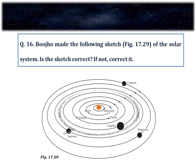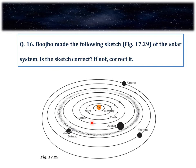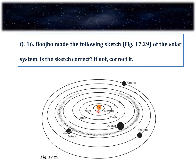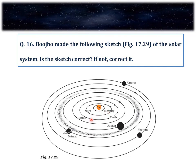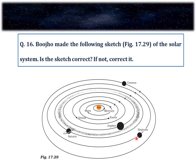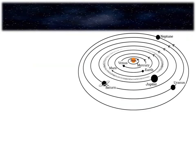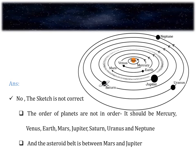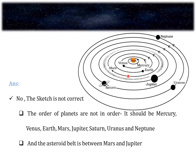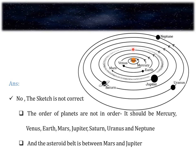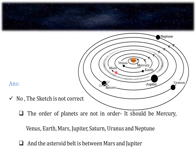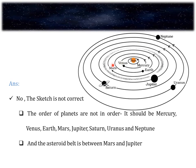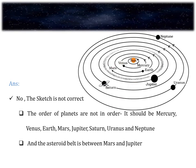Question number 16. Baju made a sketch of the solar system — is the sketch correct? In the sketch we see: Sun, Mercury, Mars, Earth, Venus, Jupiter, asteroid belt between Jupiter and Saturn, Neptune and finally Uranus. This is not correct. The correct order is Mercury, Venus, Earth, Mars, Jupiter, Saturn, Uranus and Neptune. The positions of Mars and Venus are interchanged, Neptune and Uranus are interchanged, and the asteroid belt is between Mars and Jupiter — not between Jupiter and Saturn.